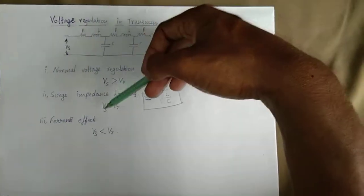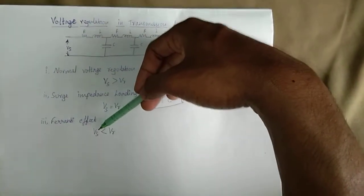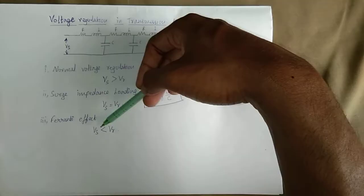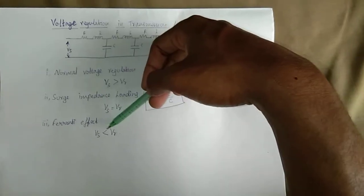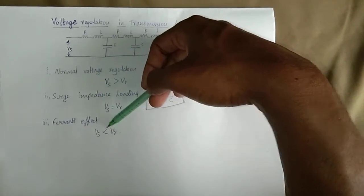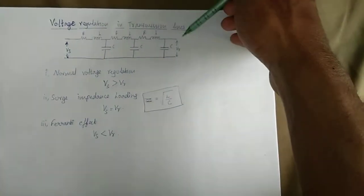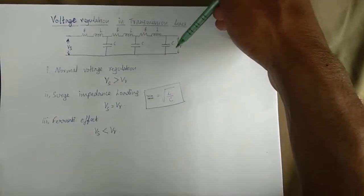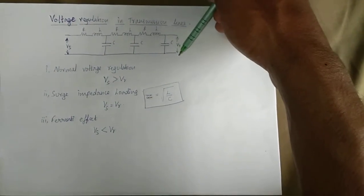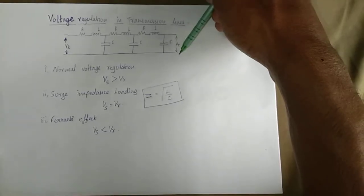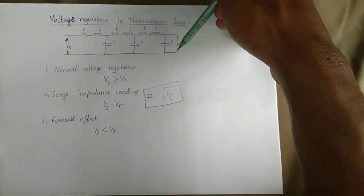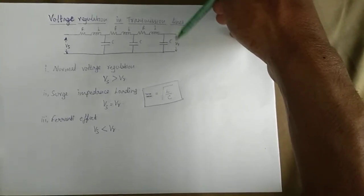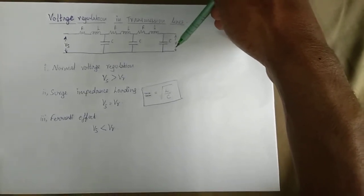The last type is the Ferranti Effect. In the Ferranti Effect, the Receiving End Voltage is higher than the Sending End Voltage.